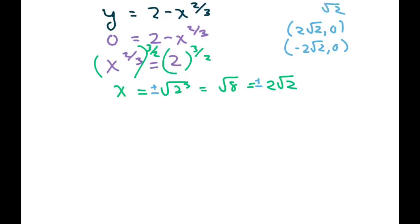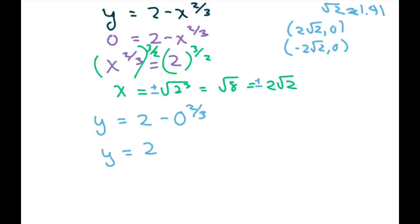Remember square root of 2 equals approximately 1.41. Now we find the y intercepts — that's when you let x be 0. So we have y equals 2 minus 0 to the 2 thirds, which means y equals 2. So when x is 0, y is 2, and that's going to help us with the graph.